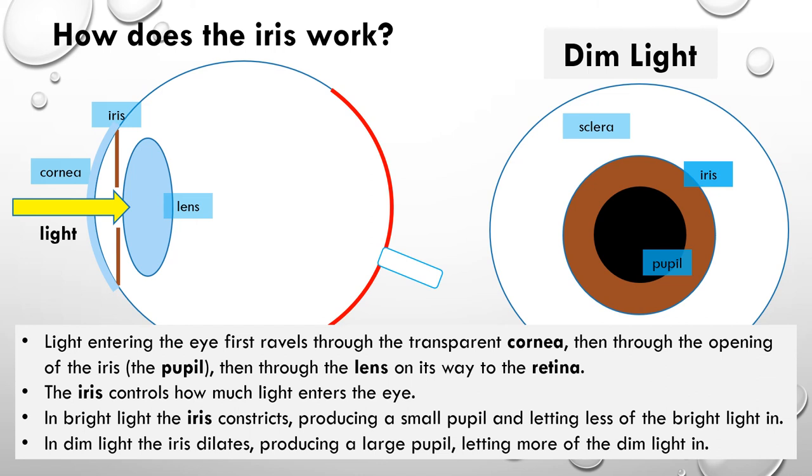So this iris here, what it does is it opens and closes like curtains, though they are circular curtains. And it controls how much light goes into the back of the eye, and therefore controls the light that's been detected on the back of the eye at the retina. Well, that's how the iris works.